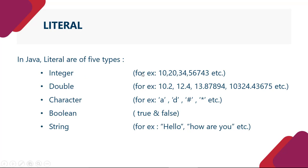In Java, literals are of five types - integer, double, character, boolean and string. Agar integer hai to iski jo value hogi woh kuch is tarah se hogi - 10, 20, 34, 5, 6, 7, 4, 3. Agar double hai to jo values hogi woh hogi 10.2, 12.4, 13.87, etc. Agar character hai to jo basically values hogi woh a hogi, d hogi, hash, star, etc. Agar boolean hai to do hi value hogi, ya to true ya phir false. Aur string hai to kuch bhi ho sakti hai string jaise ki hello, how are you, I am fine.